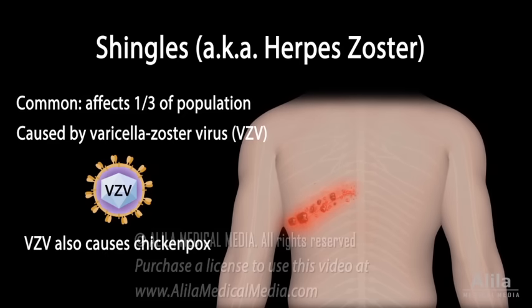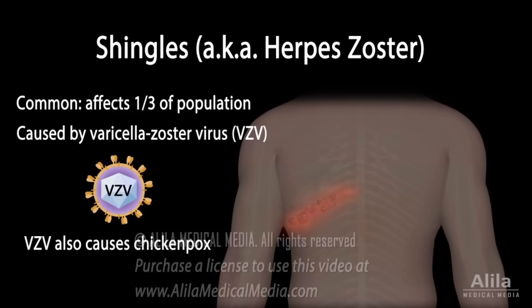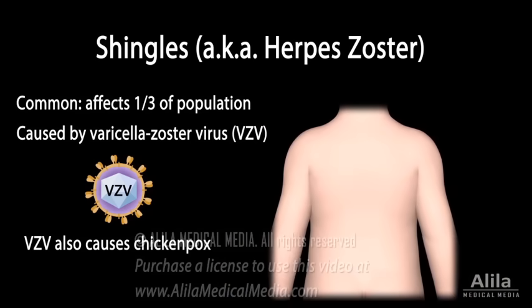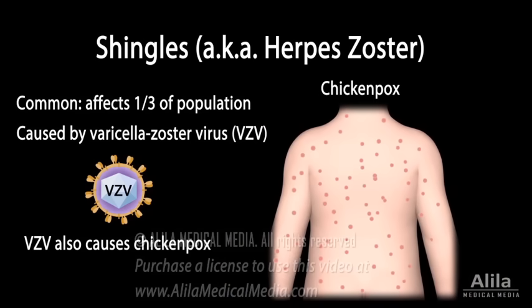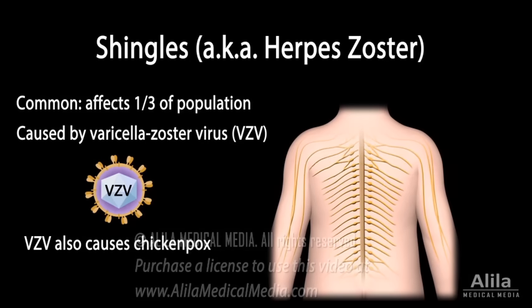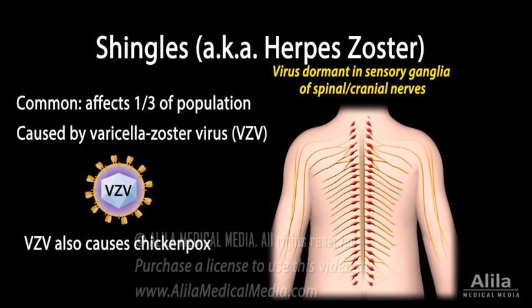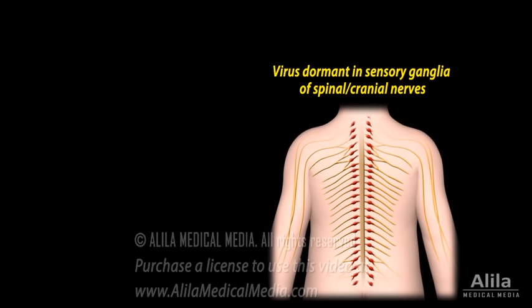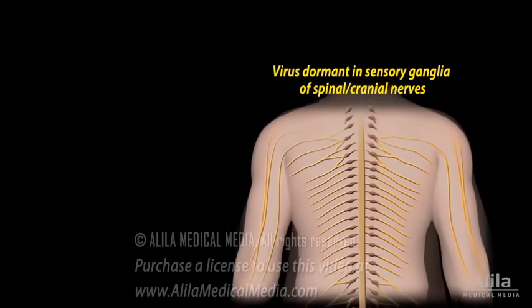The first exposure to the virus, usually during childhood, leads to chicken pox. After the primary infection resolves, the virus moves to sensory ganglia of the spinal and cranial nerves, where it becomes inactive. The body's immunity against chicken pox suppresses viral replication, keeping it dormant for decades.